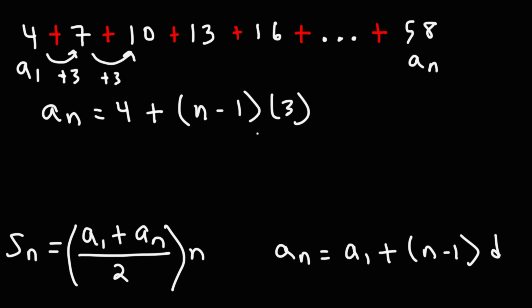Now, we already know the value of a sub n. a sub n is 58. So we have 58 is equal to 4 plus... I'm going to distribute the 3 to the n minus 1. So this becomes 3n minus 3. Combining like terms, we have 4 minus 3, which is positive 1.